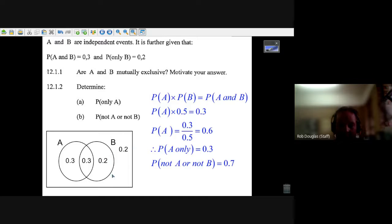Or everything not B, 0.3 and 0.2. You don't count the 0.2 twice. So it's 0.7. And there's your answer. That's how it works.